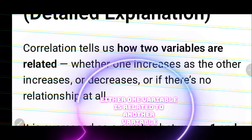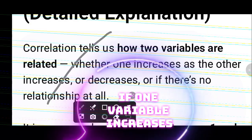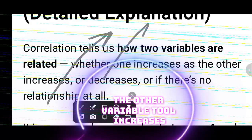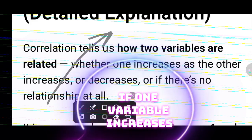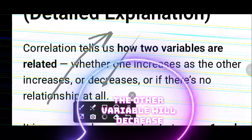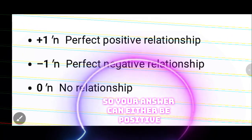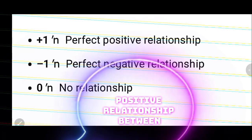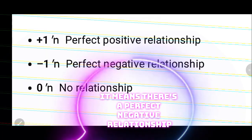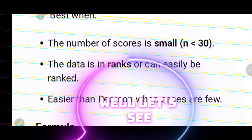Either one variable is related to another variable. For instance, if there is a positive relationship, if one variable increases, the other variable would also increase. But if there is a negative relationship, when one variable decreases, the other variable will increase. Your answer can either be positive, negative, or zero. Positive one means a perfect positive relationship, negative one means a perfect negative relationship, and zero means there's no relationship at all.